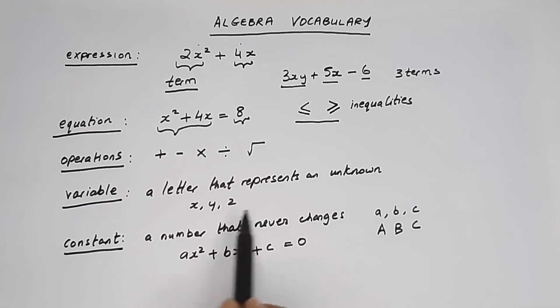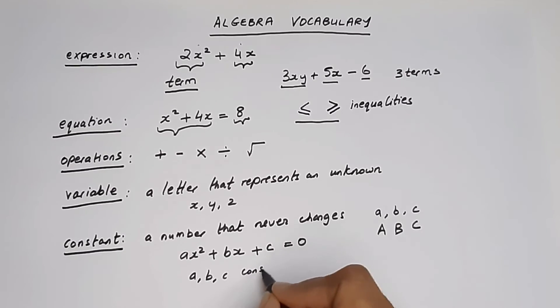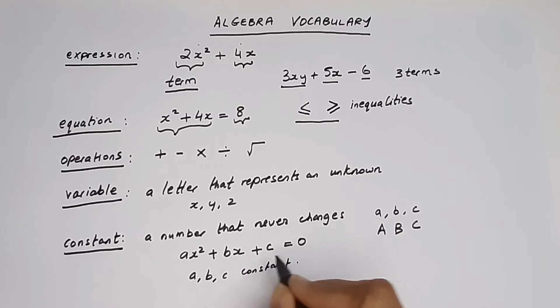But for variables, we like to use the last set of letters of the alphabet. So here we can see that a, b, and c are constants and x is your variable. Now let's write this with the constant in it. Let's change a to 4.